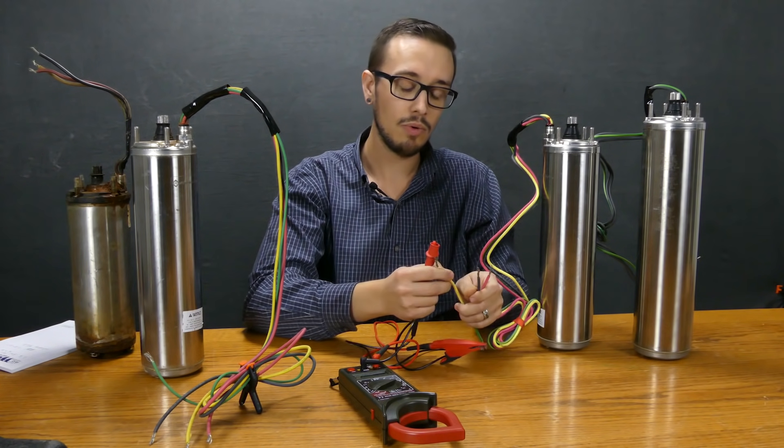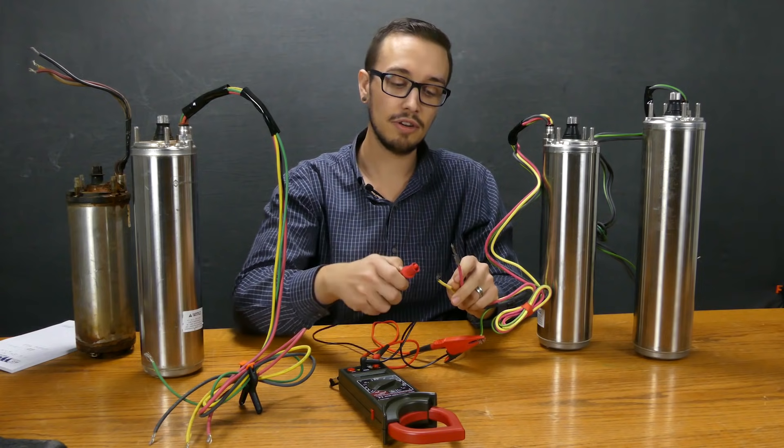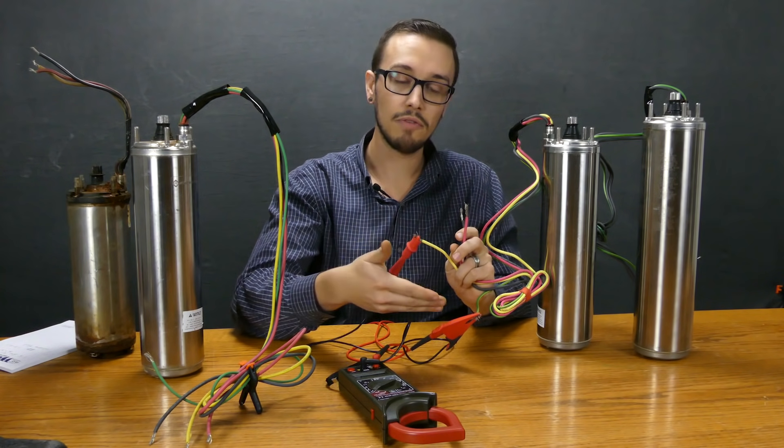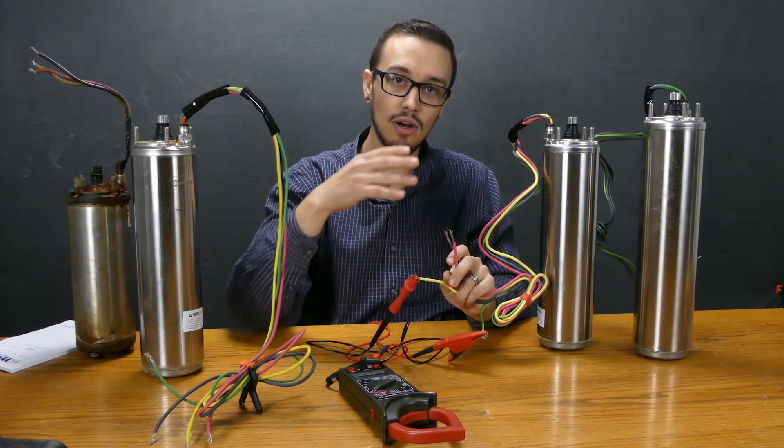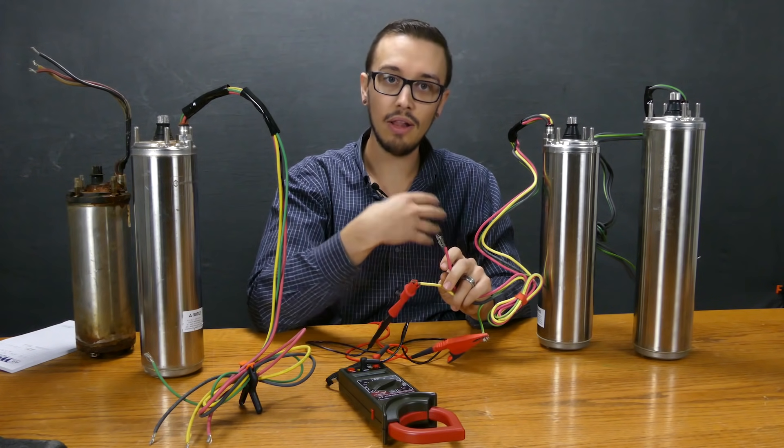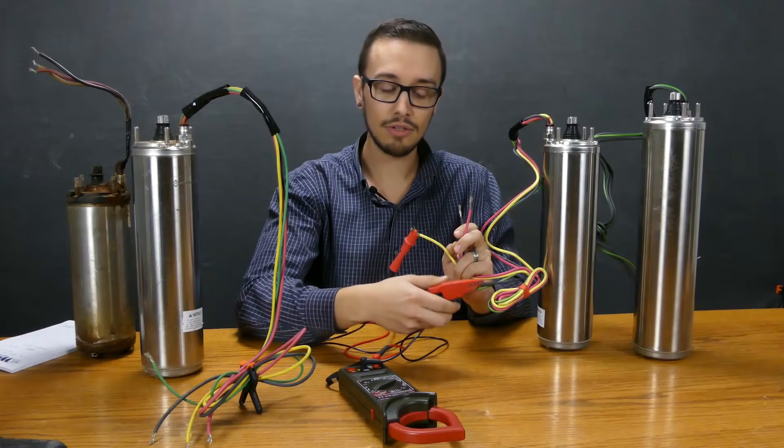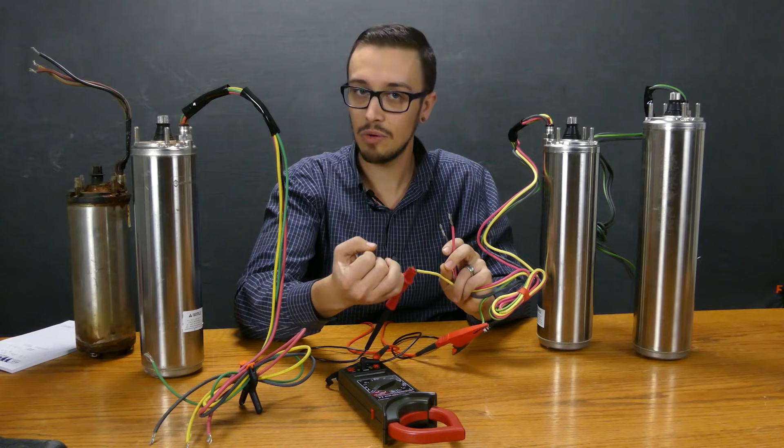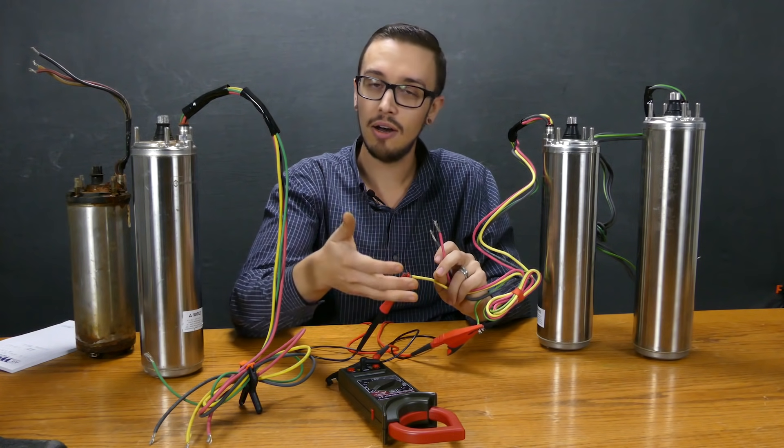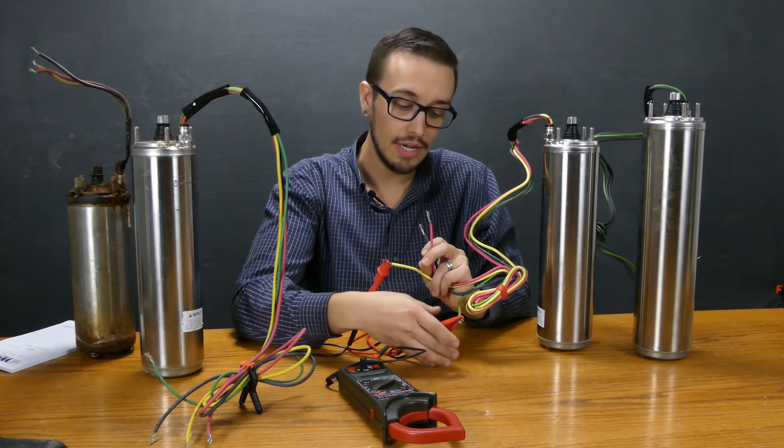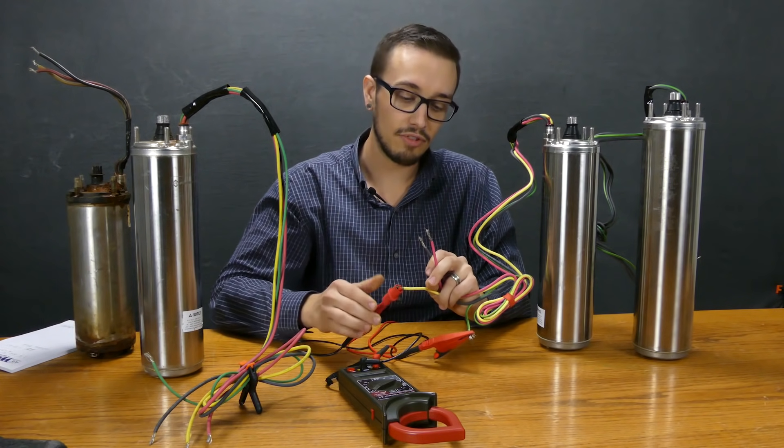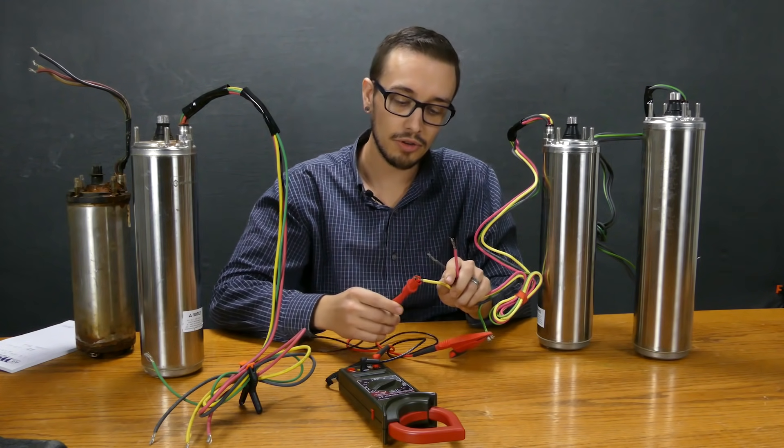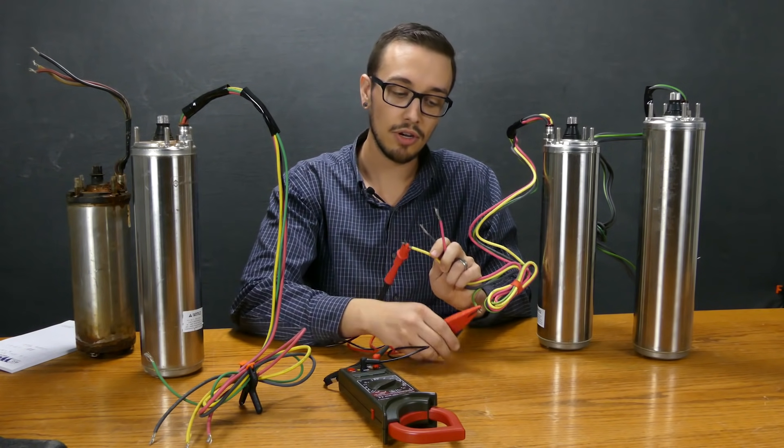So basically all we've got to do with this test is roll through these different leads. We've got one hooked to the ground. Now if you were testing this at the well itself with the pump still down in the well, you can hook your ground to either a ground if you've got one exposed like at a splice, or just hook it right to the well casing if you've got a metal well casing.